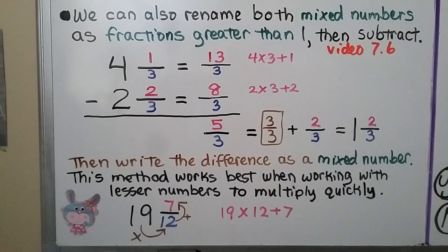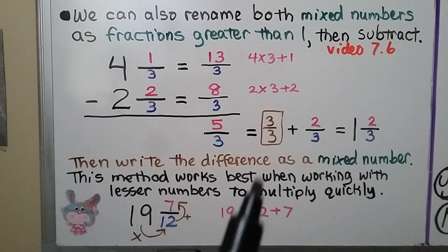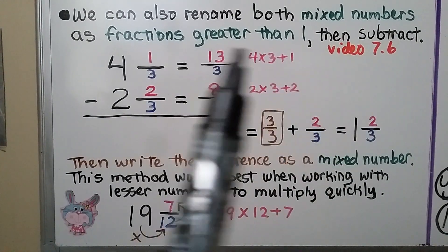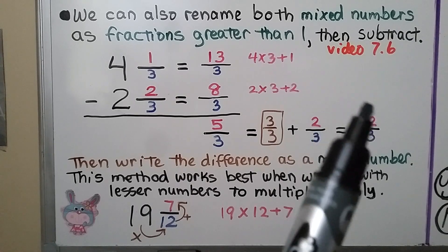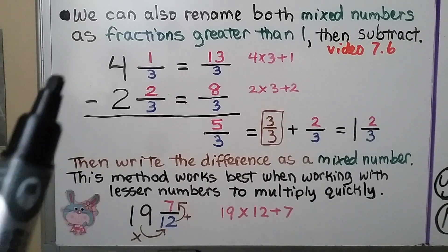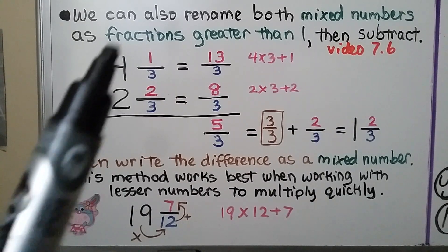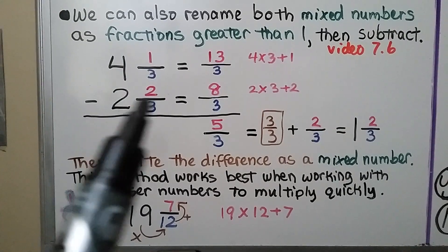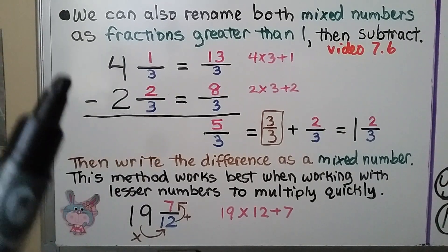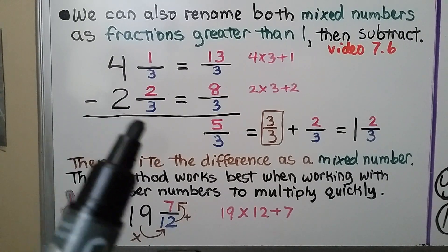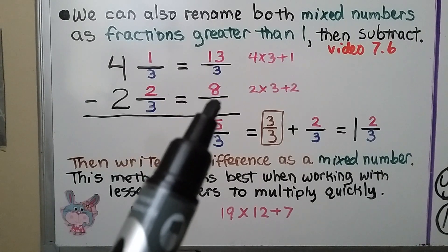We can also subtract by renaming both mixed numbers as fractions greater than 1, then subtracting. We learned how to do this in video 7.6. So we have 4 and one-third minus 2 and two-thirds, and we're going to rename both the minuend and the subtrahend as fractions greater than 1.